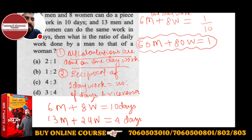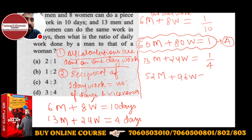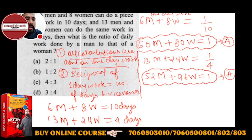Let's call this equation A. The second condition: 13 men plus 24 women — their one day work is 1/4. Cross multiplying: 13 × 4 = 52 men, plus 24 × 4 = 96 women, is equal to 1. This is equation B.